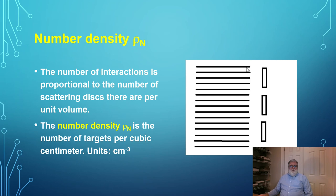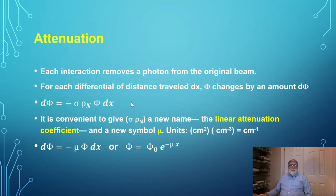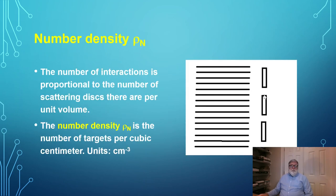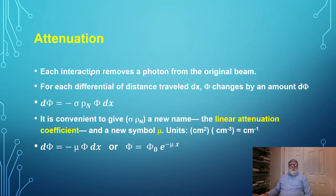The number density is another factor. If I have more than one scatterer, the more scatterers I have, the more interactions will take place. The number of scatterers per unit volume — the number density, in targets per cubic centimeter — affects how many total interactions take place. Now let's talk about attenuation. Each interaction removes a photon from the beam, so we attenuate the fluence through the scattering process.